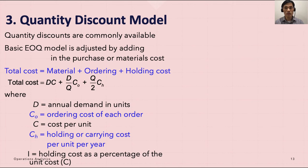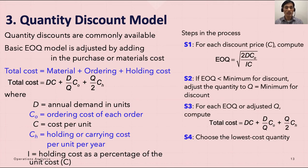There are four steps to follow. Step one: for each discount price C, calculate EOQ equals square root of 2DC_O divided by IC, where I stands for holding cost as a percentage of the inventory cost. Step two says that if EOQ is less than the minimum for discount, adjust the quantity to Q, which is the minimum for the discount.